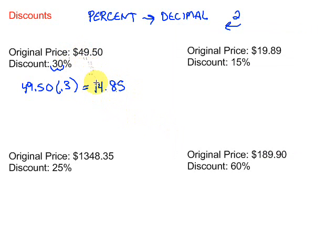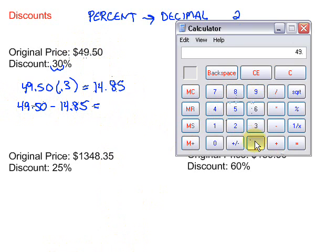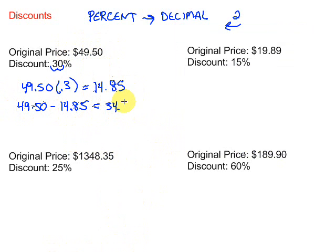So to figure out what price we're going to pay, we're going to have to take our original price and subtract that discount amount. So we have 49.50 minus 14.85, and let's see what that gives us. 49.50 minus 14.85 is 34.65. That took us two steps, but the price that we would pay, if something was originally priced at 49.50 and it was 30% off, we'd pay 34.65.